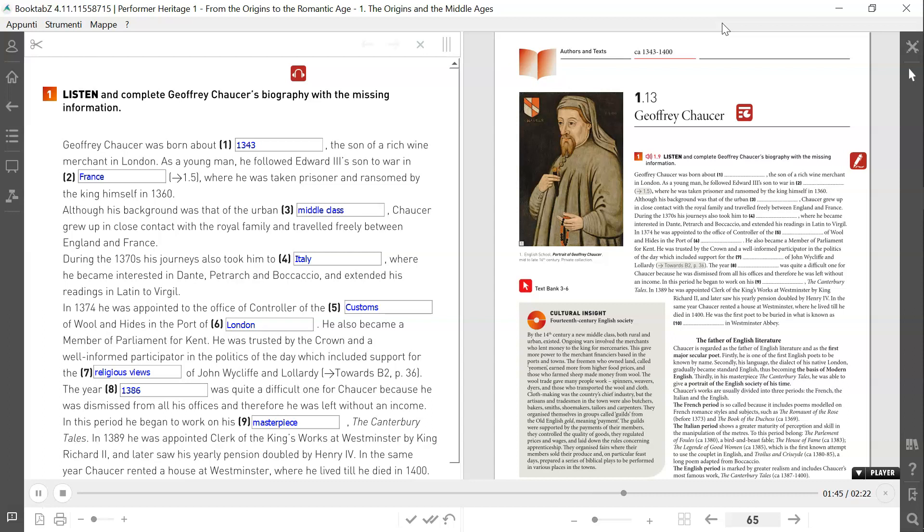In this period, he began to work on his masterpiece, The Canterbury Tales. In 1389, he was appointed Clerk of the King's Works at Westminster by King Richard II, and later saw his yearly pension doubled by Henry IV. In the same year, Chaucer rented a house at Westminster, where he lived till he died in 1400. He was the first poet to be buried in what is known as Poet's Corner in Westminster Abbey.